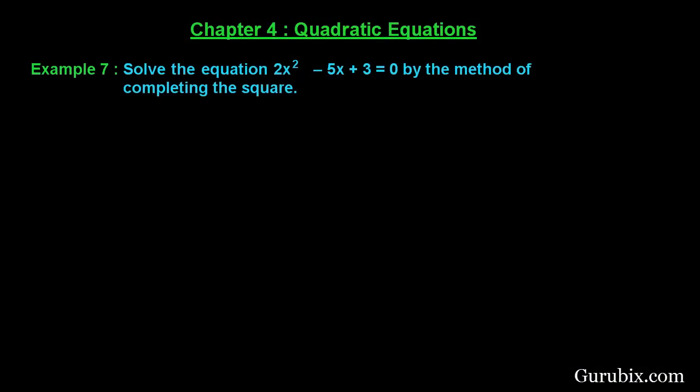Welcome friends, let us solve example number 7 of chapter 4. The question says solve the equation 2x square minus 5x plus 3 equals 0 by the method of completing the square.